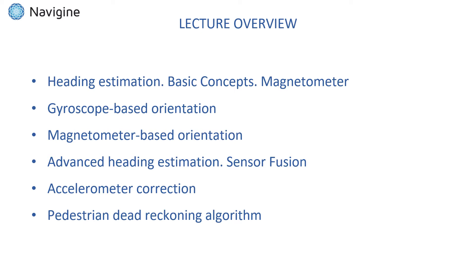Our lecture is structured as follows. First we will start with basic discussions on heading estimation. Then we will explain how one can use gyroscope or magnetometer to determine user's heading and discuss pros and cons of using each of these sensors.